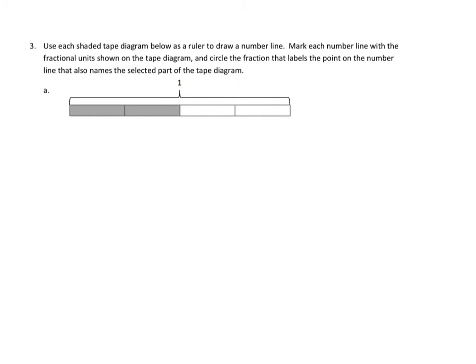So let's take a look at our number line. Our number line would go all the way out this way, and it would have marks at this point, this point, this point, this point, and this point. That number line would actually extend further to the left and to the right — we might not label points out there, but it does actually go further out. Let's take a look at our tape diagram. Our tape diagram is a whole divided into one, two, three, four parts. So that tells me that we're working in fourths.